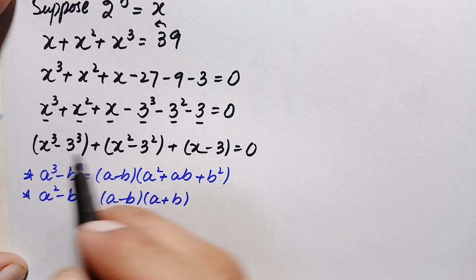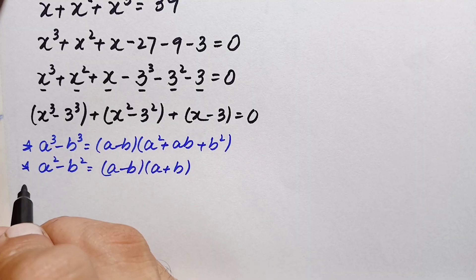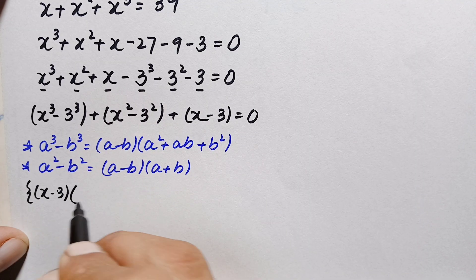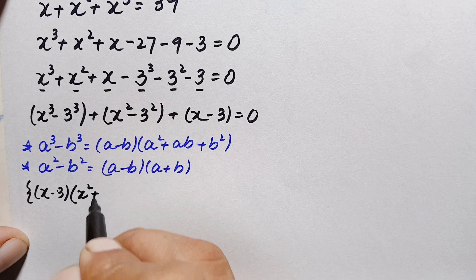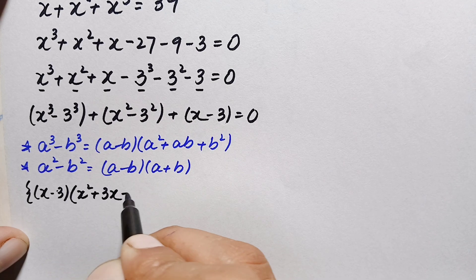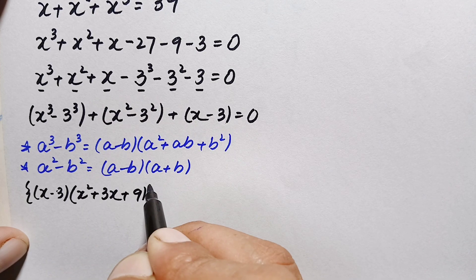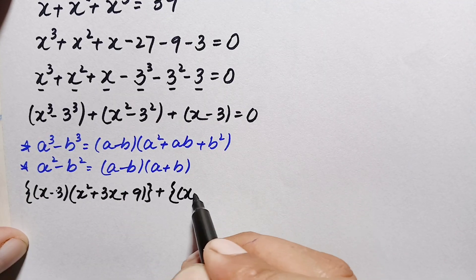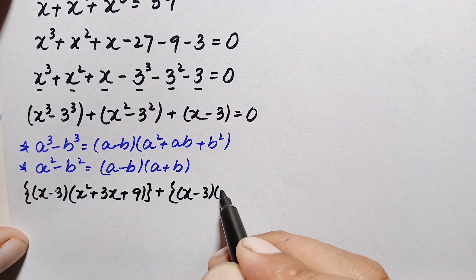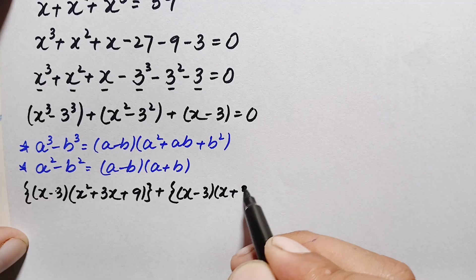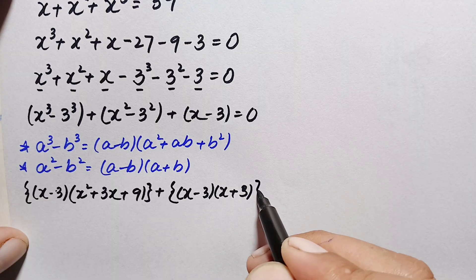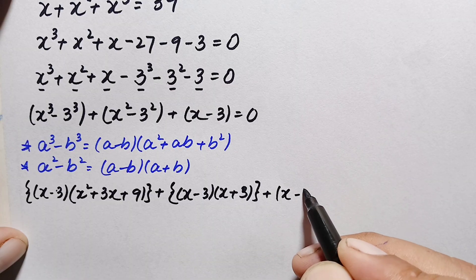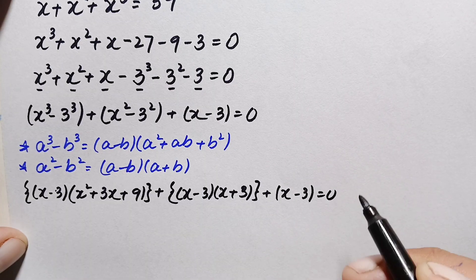Applying the identities, the equation becomes: (x minus 3)(x squared plus 3x plus 9), plus (x minus 3)(x plus 3), plus (x minus 3), all equal to 0.